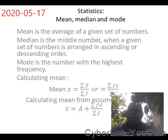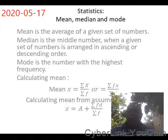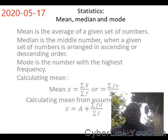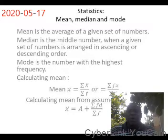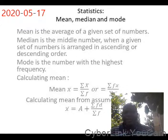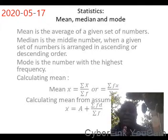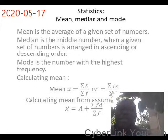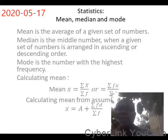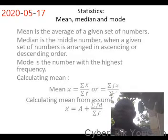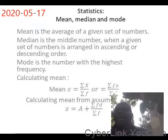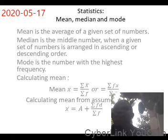Another one we will be looking at is median. Median is the middle number when a given set of numbers is arranged in ascending or descending order. The middle number, when arranged in ascending or descending order, is called the median. It is always found by arranging the numbers in ascending or descending order.